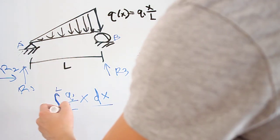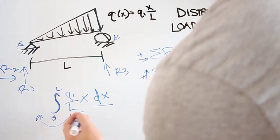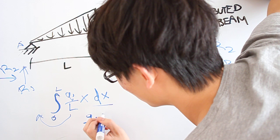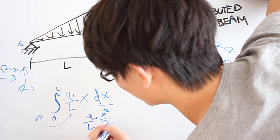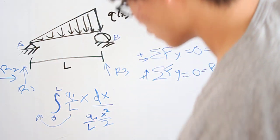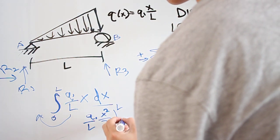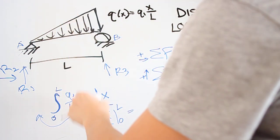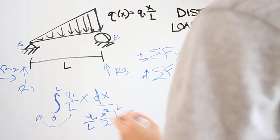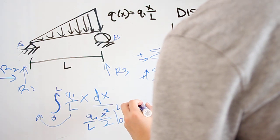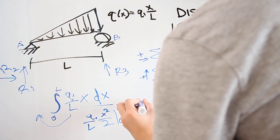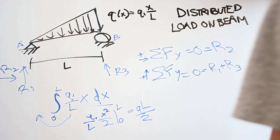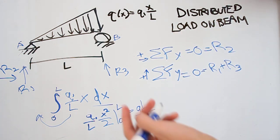The constants q1 over L can be moved outside the integral. That gives q1 over L times x squared over 2, and you evaluate the antiderivative from 0 to L. What we get is a concentrated equivalent load of q1L over 2. So that's our total force.